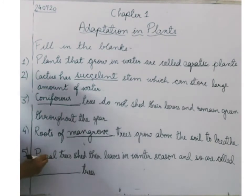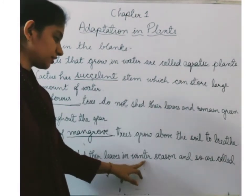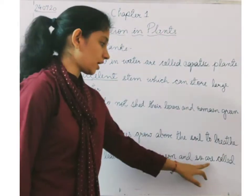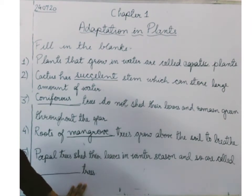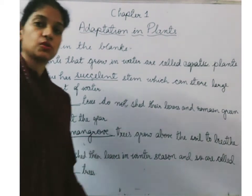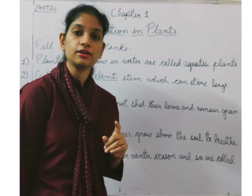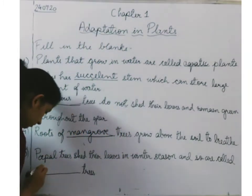Next: peepal trees shed their leaves in winter season and so are called dash trees. Peepal trees shed their leaves in winter and so they are called deciduous trees.